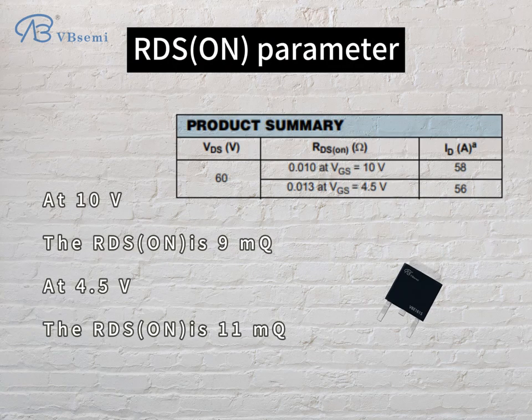RDS-ON parameter: at 10V, the RDS-ON is 9mΩ; at 4.5V, the RDS-ON is 11mΩ.